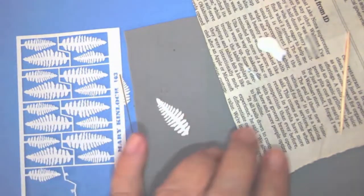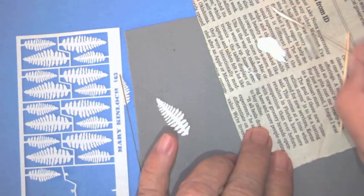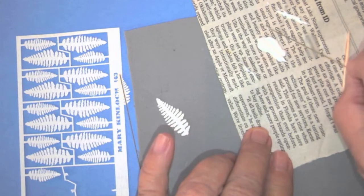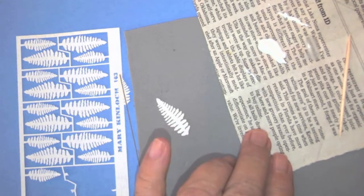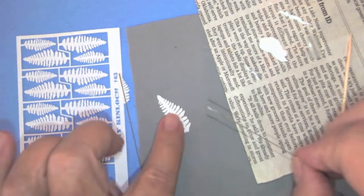Then I run my wire through the white glue, kind of wipe off the excess, and place it down the center of the fern.